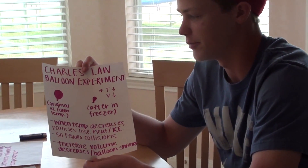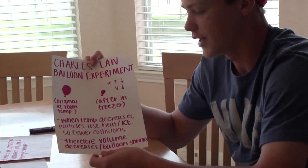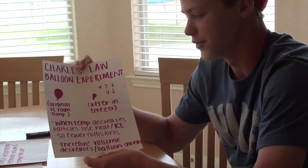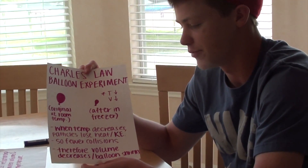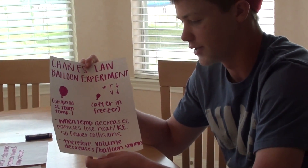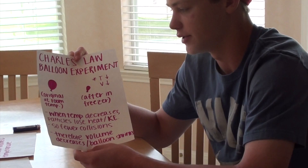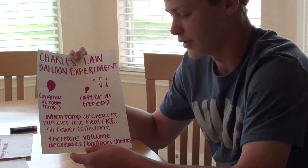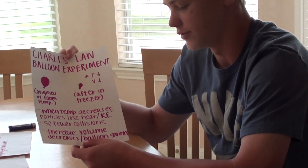So in our experiment, we had a balloon, took it at room temperature, then stuck it in the freezer, and it shrunk. This is because when temperature decreases, the particles in the balloon lose heat and therefore lose kinetic energy, and that's due to there being fewer collisions in the balloon. Because of that, the volume decreases and the balloon shrinks.